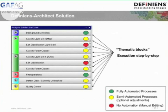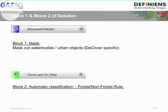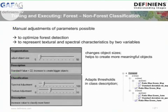I want to show you now in more detail what you can do with one block. The first block is a decover-specific one. We have to mask out water bodies and urban objects because we have received these classifications from decover project partners. Then the next step is the automatic classification of forest and non-forest, which is a semi-automatic process where the interpreter can interfere. There are two boxes: one to adjust the segmentation and one for the classification.